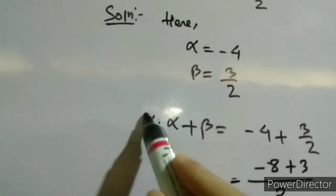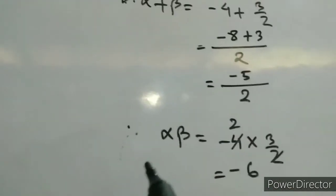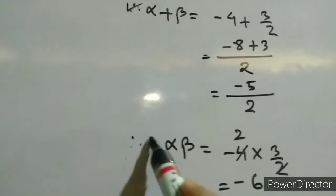After simplification, the 2s cancel and we get 2x squared minus 5x minus 12. This is our quadratic polynomial for part 1. In all such questions, first find alpha plus beta, then find alpha times beta, then substitute into the formula to get the quadratic polynomial.